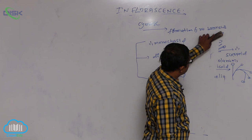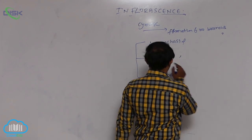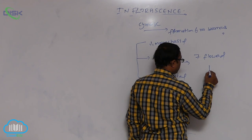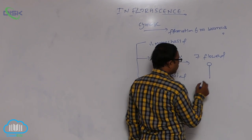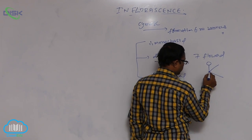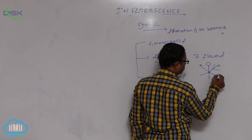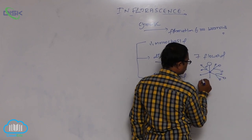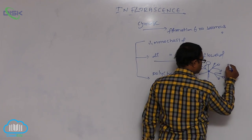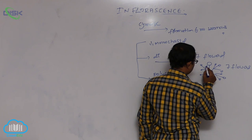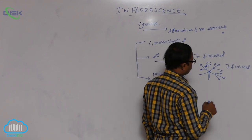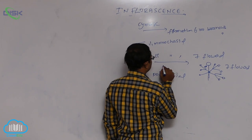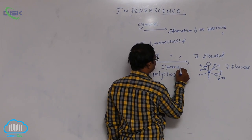Second is dicasial — it is a seven-flowered inflorescence. At the tip of the peduncle, a flower is formed, and at every time two branches are formed. Totally seven flowers are formed — that is known as dicasial cymose. Example is Ipomoea — seven-flowered inflorescence.